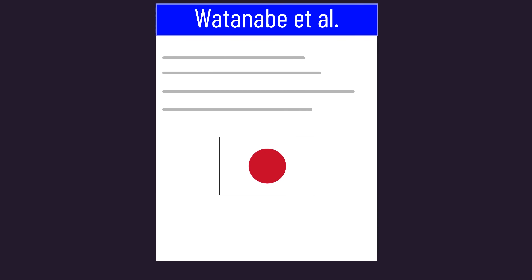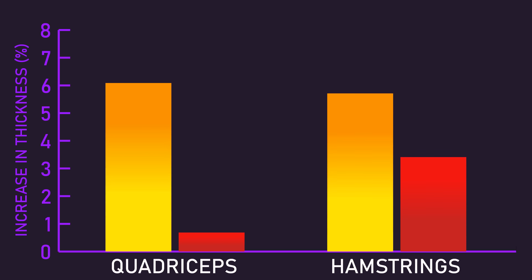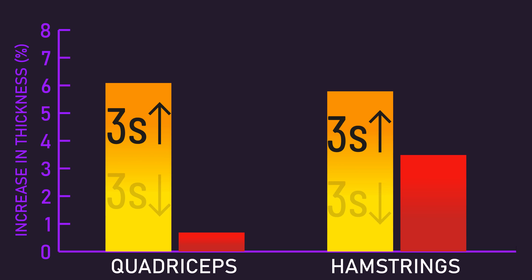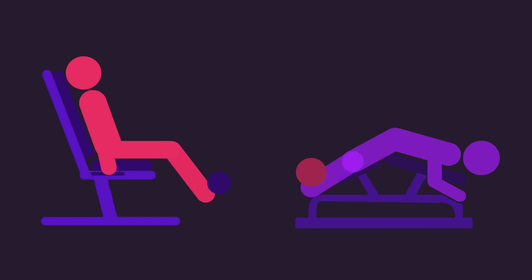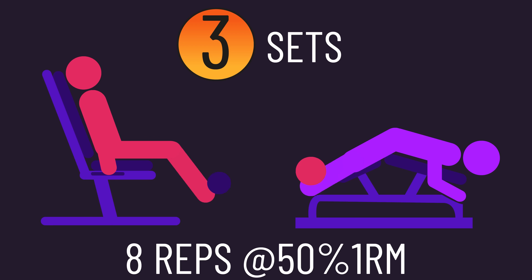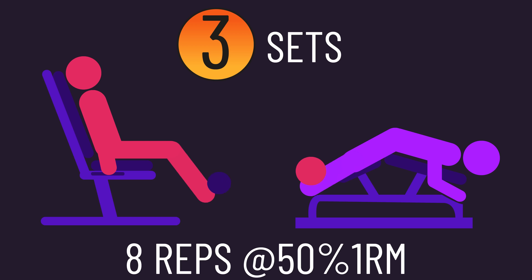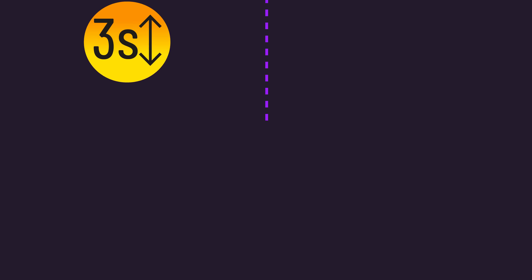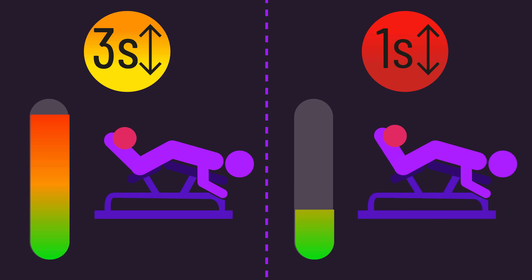As an illustration, Watanabe and colleagues found greater quad and hamstrings growth after training with a 3-second lifting and lowering tempo versus a 1-second tempo. However, both conditions involved performing 3 sets of 8 reps with a 50% 1 rep max load on the leg extension and leg curl. With these training variables, a 3-second tempo induces much greater fatigue and gets you closer to muscular failure than a 1-second tempo.